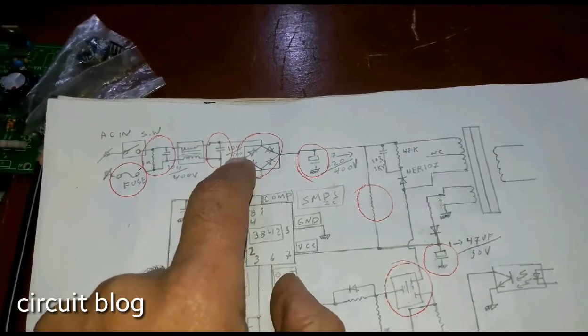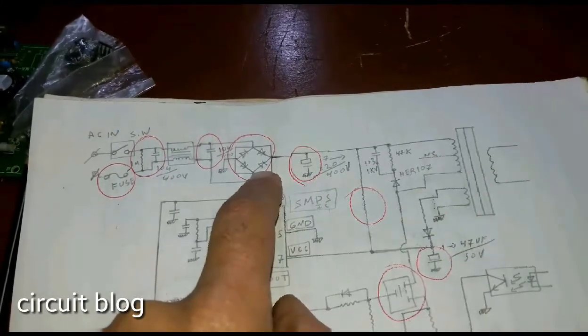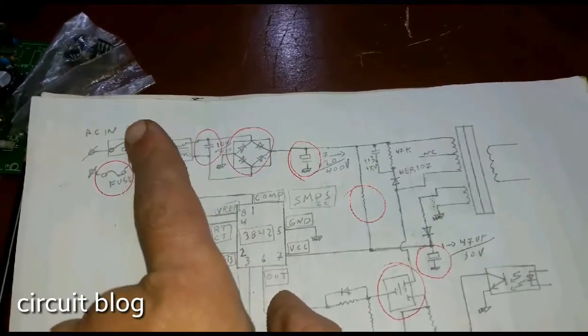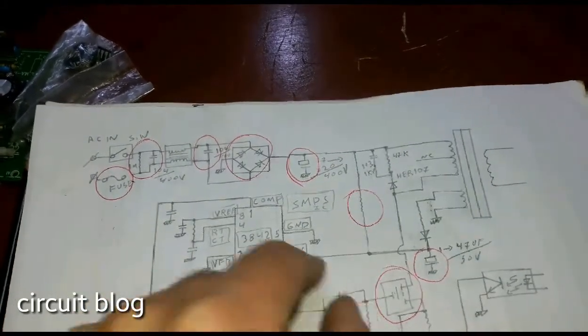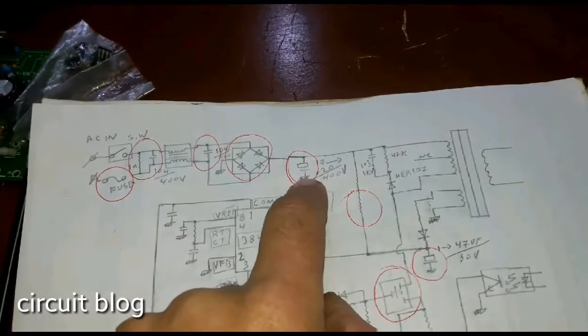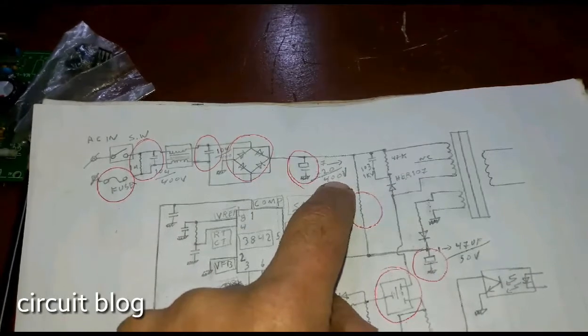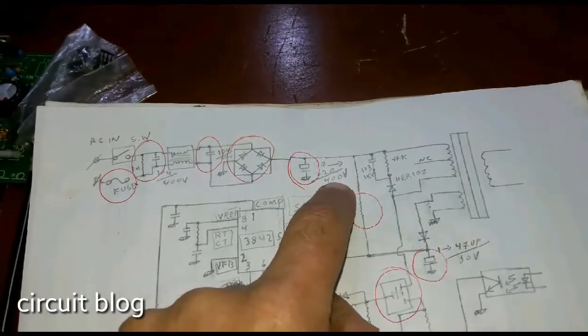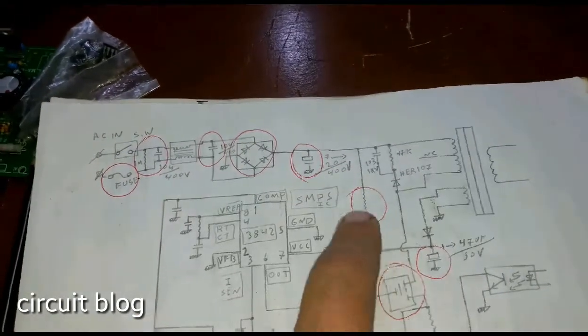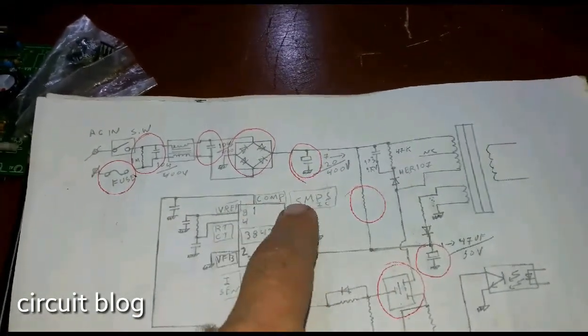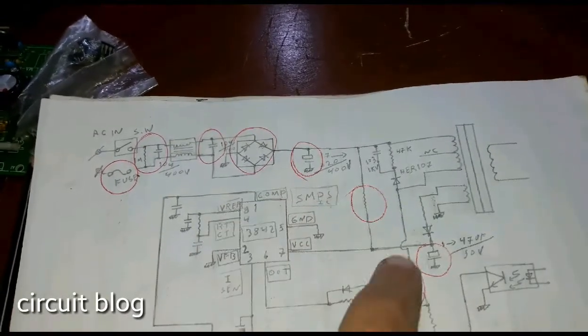The bridge diode or the diodes that convert the electricity from AC to DC should handle up to a thousand volts. And also the filter capacitor should have the power to handle at least a 400 volt power rating.